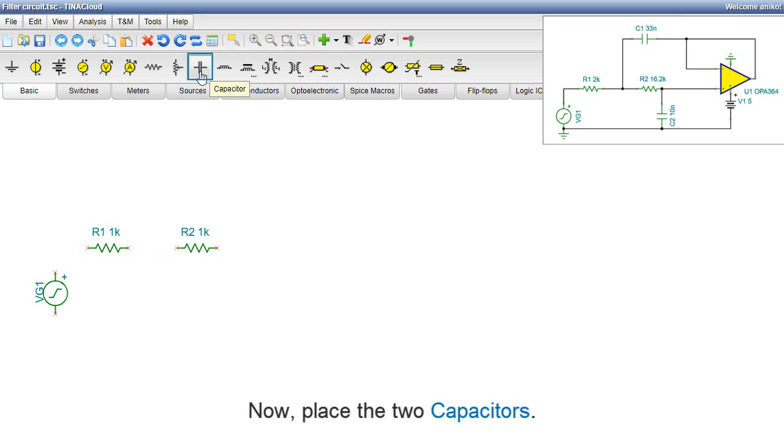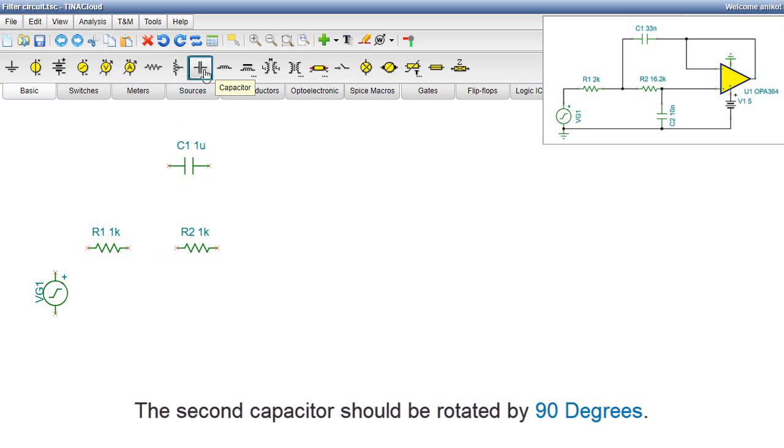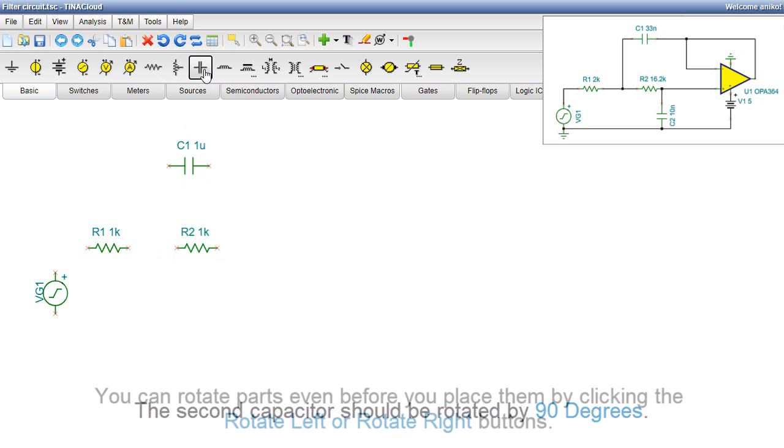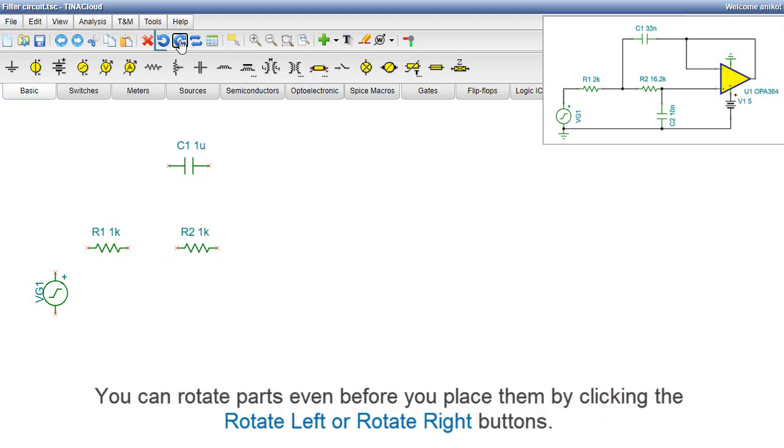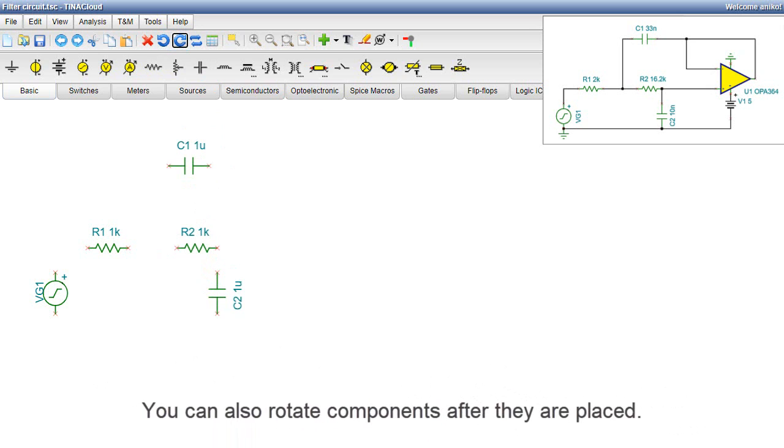Now, place the two capacitors. The second capacitor should be rotated by 90 degrees. You can rotate parts even before you place them by clicking the Rotate Left or Rotate Right buttons. You can also rotate components after they are placed.